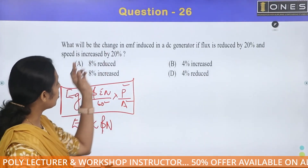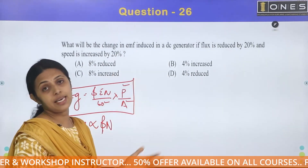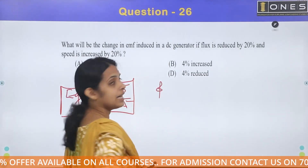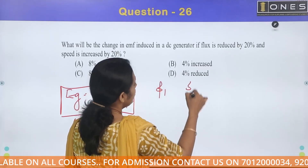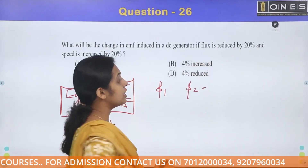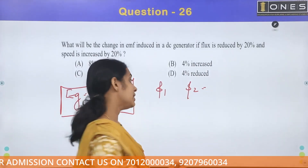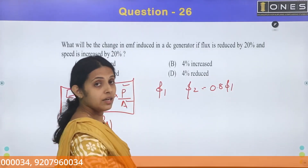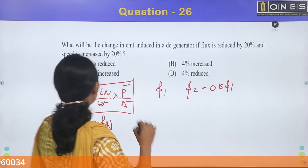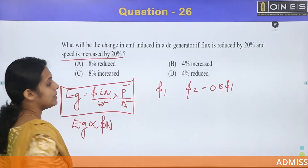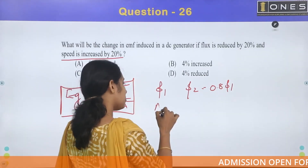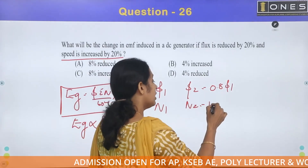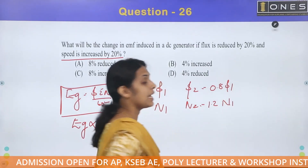Initial flux is φ1. The flux is reduced by 20%, giving new flux φ2 = 0.8φ1. Speed is increased by 20%, so new speed N2 = 1.2 × N1.